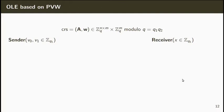Let's see how we can recast the PVW-OT scheme as an OLE scheme. Again, the CRS is composed by a matrix A and a vector W over a ring ZQ. Here, Q is a modulus such that Q can be written as Q1 times Q2. The OLE is going to be performed over ZQ1.